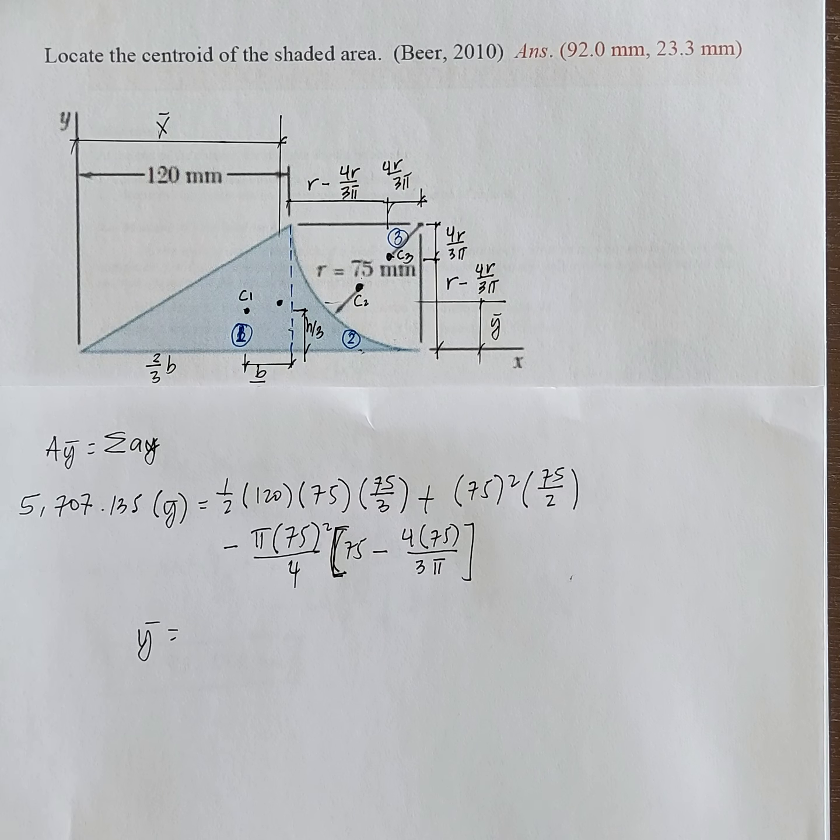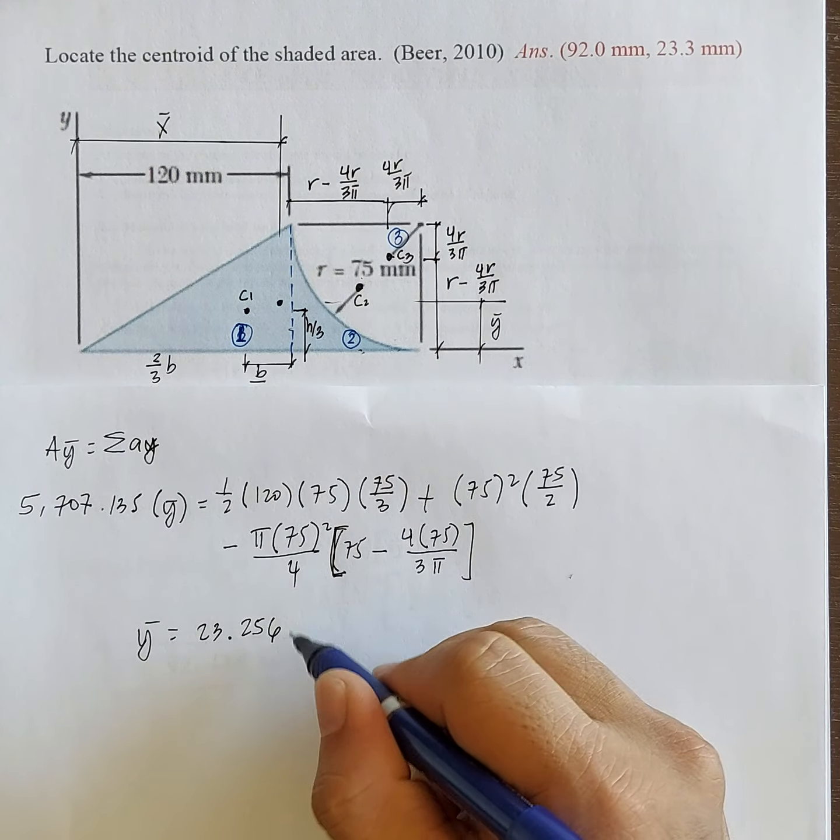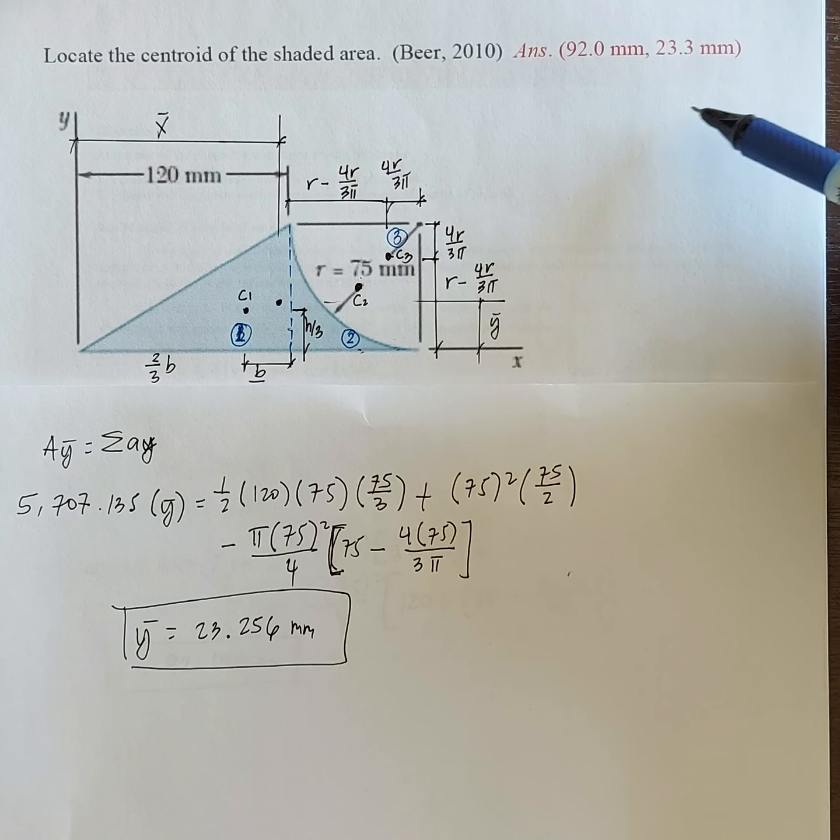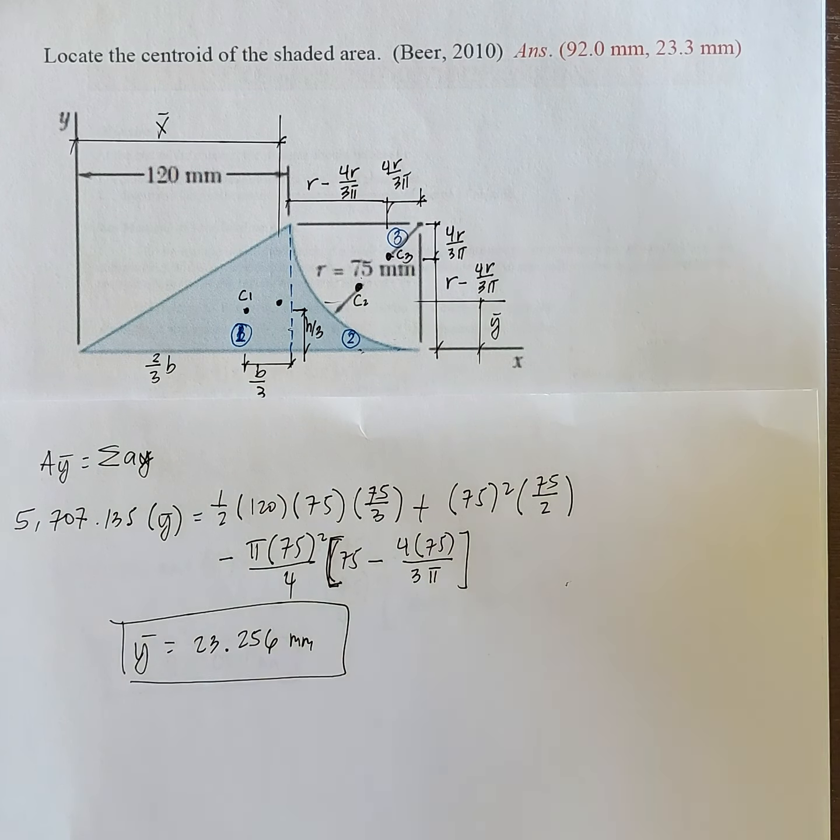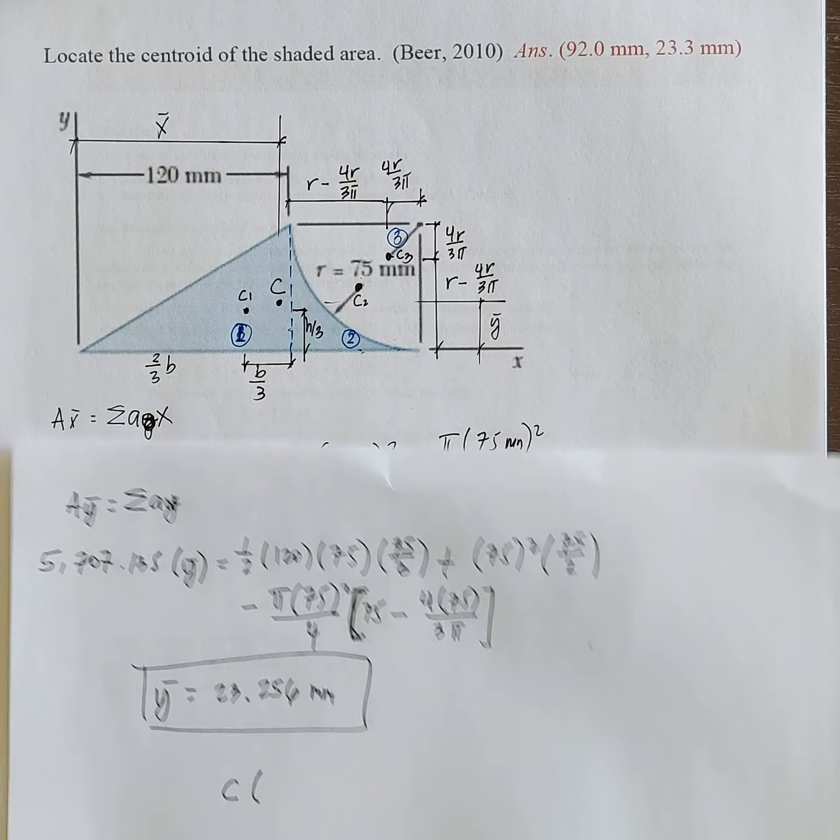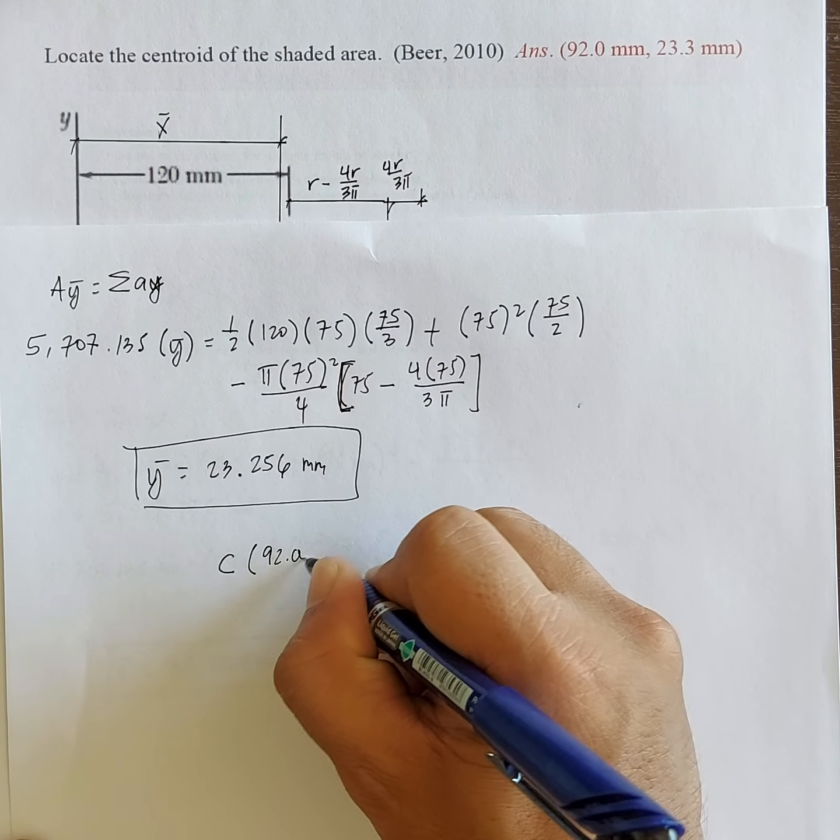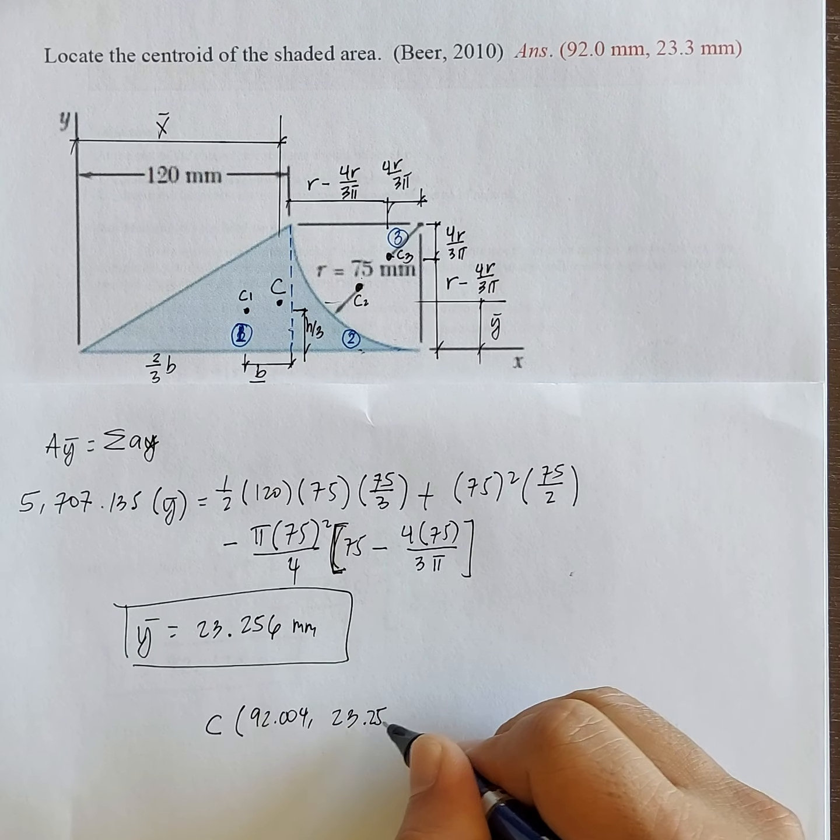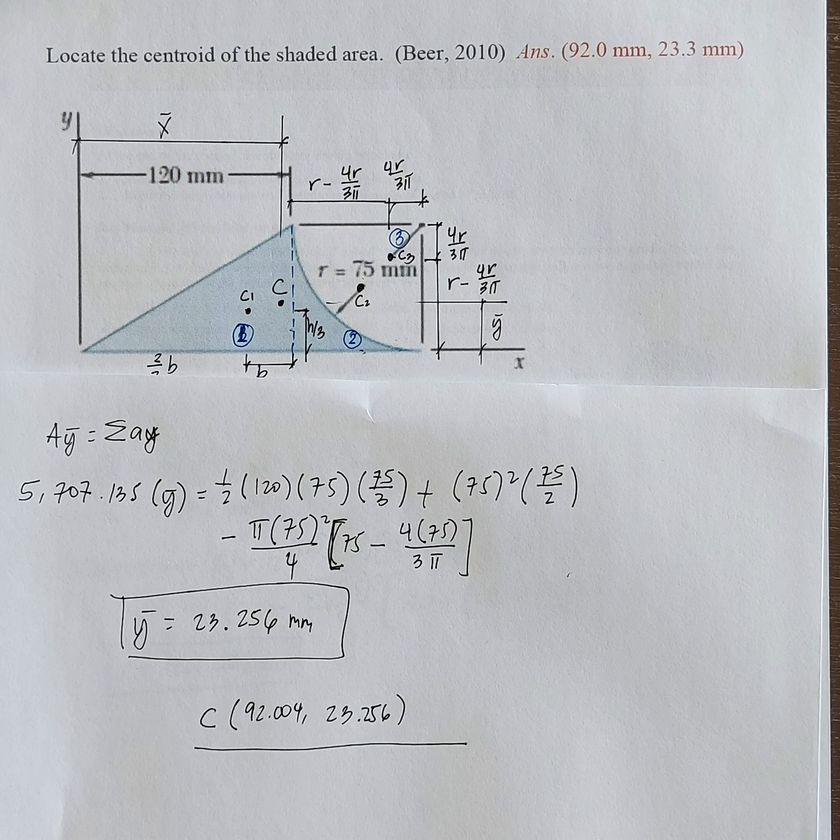Alright, so the answer is 23.256 millimeters. The answer in the module is 23.3. There's a small discrepancy because of rounding of numbers. So our answer, the center coordinates of the centroid is, we have the x-bar 92.004 and the y-bar is 23.256 mm. So these are the coordinates of the centroid.